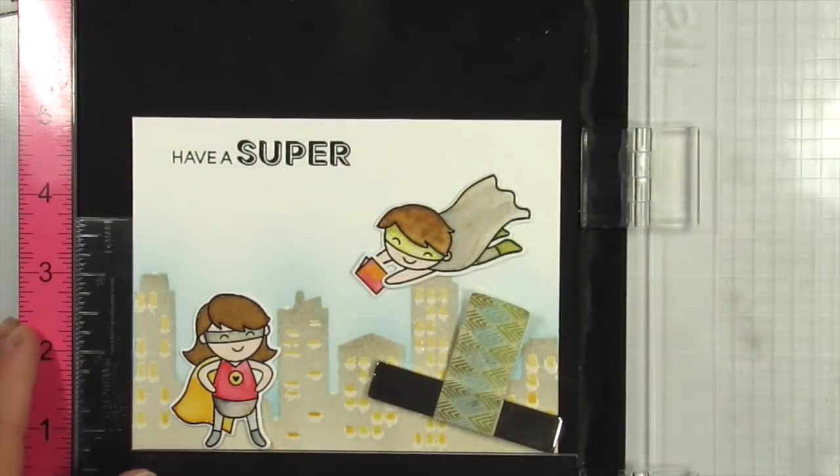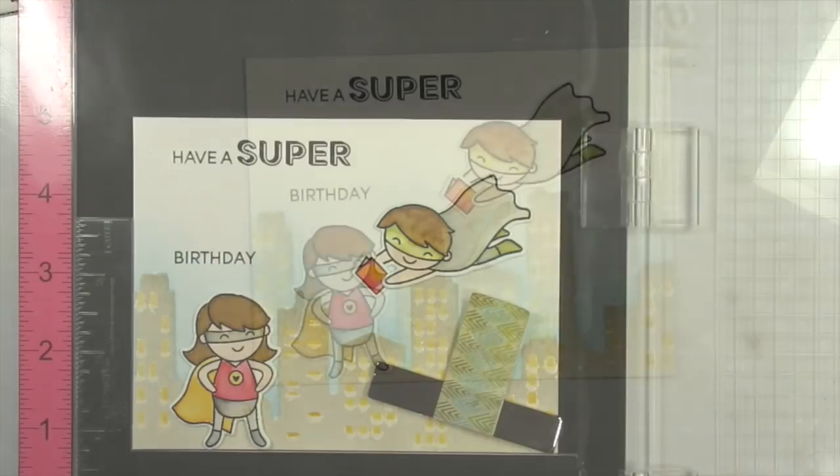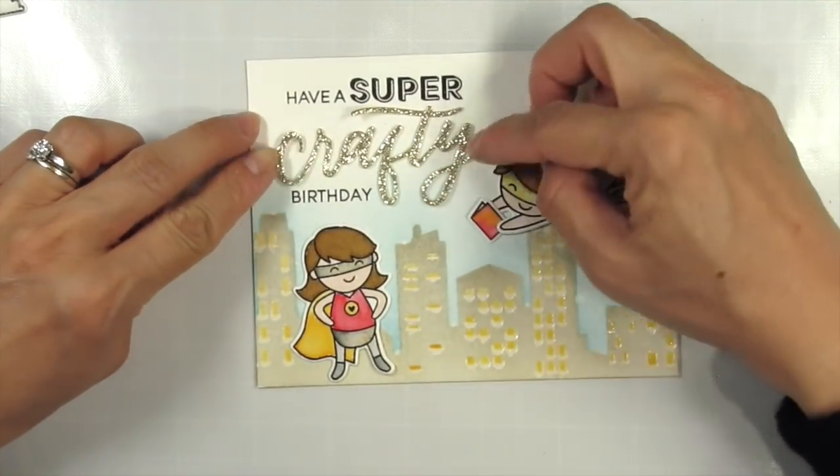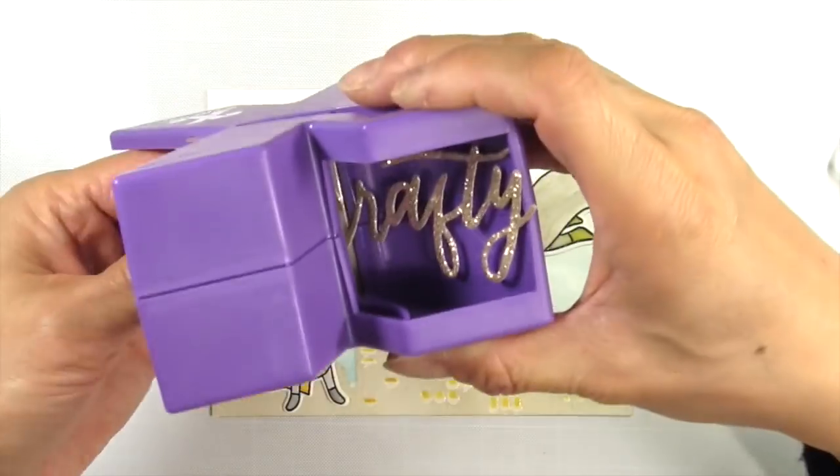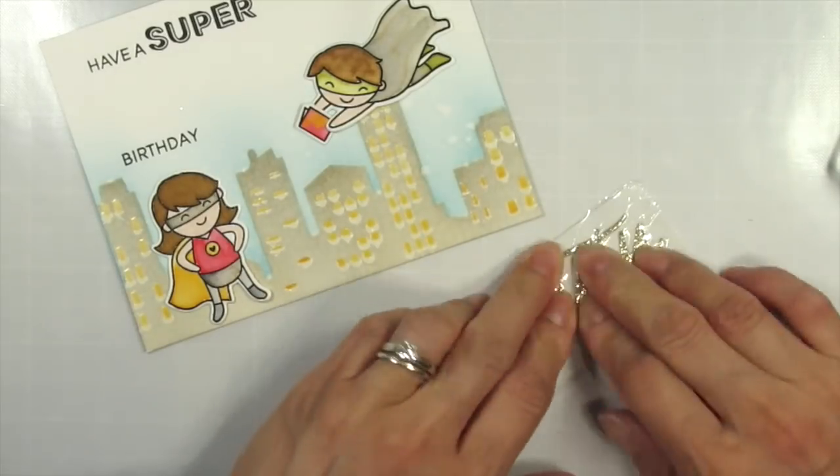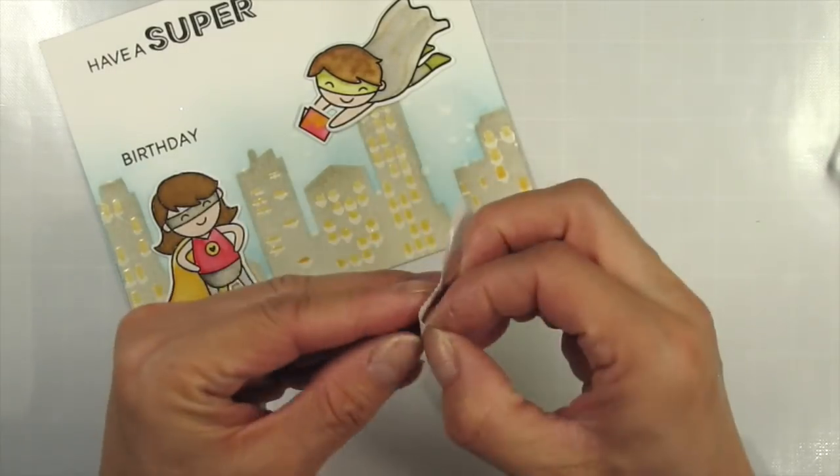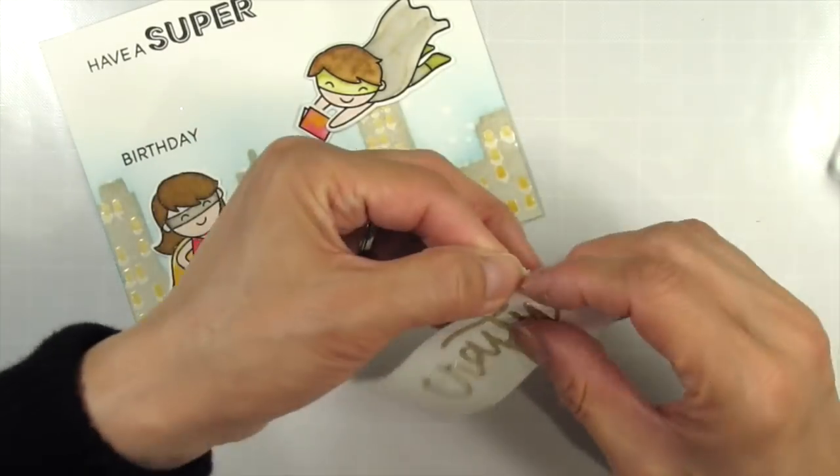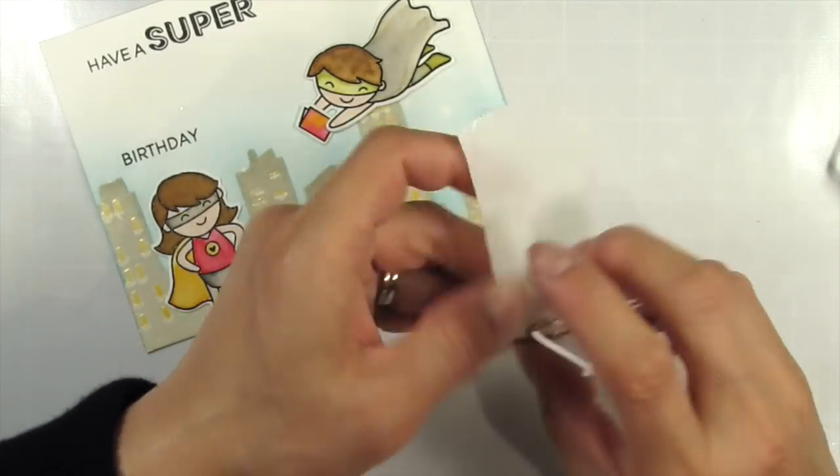I thought the black die cut was a bit too harsh for the scene so I tried a gold glitter die cut that is closer to the color of the buildings and I like that a lot better. I use my Xyron sticker maker to attach the die cut word to the panel. I make sure the adhesive is flat around the edges of the die cut and remove the adhesive quickly to minimize the gumminess and secure it to the panel.